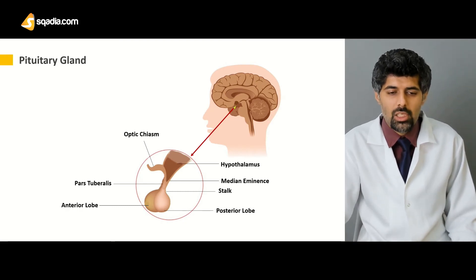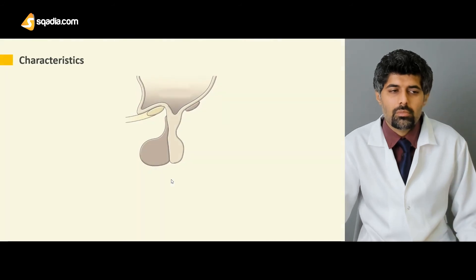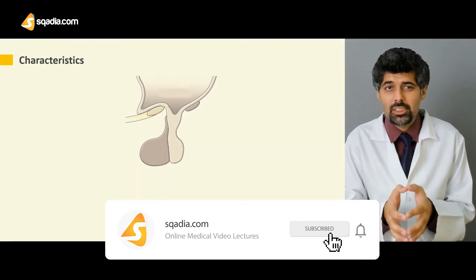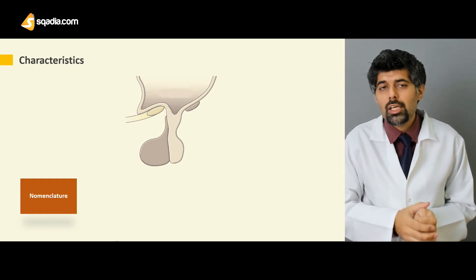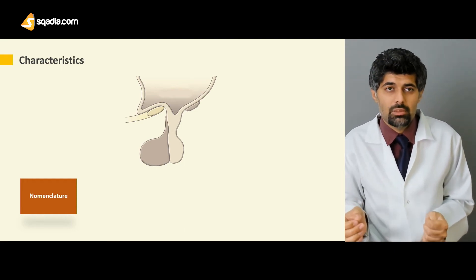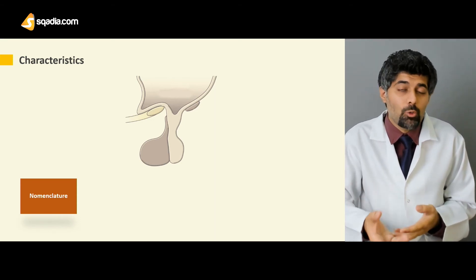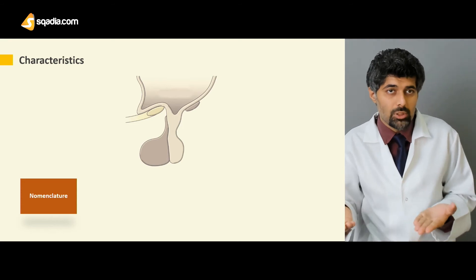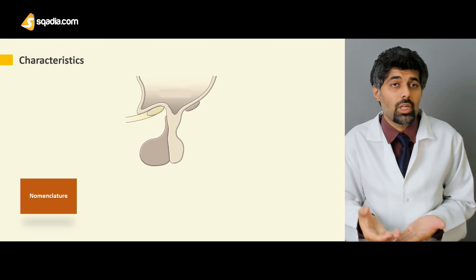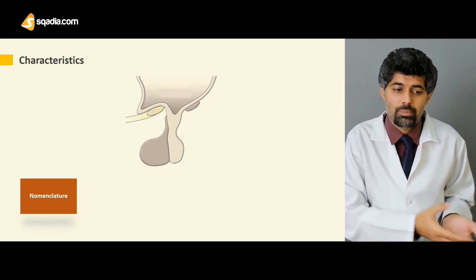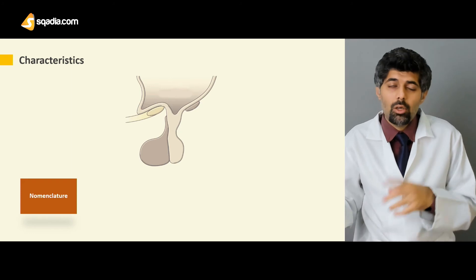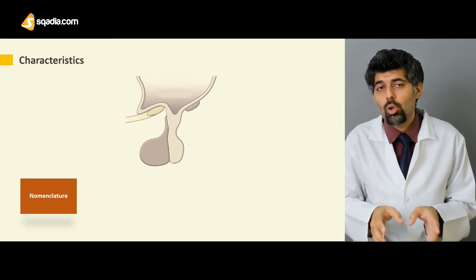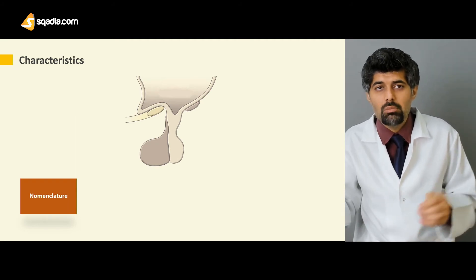Next we have the hypothalamus — the whole hypothalamus with its median eminence. Now let's talk about the characteristics of the pituitary gland. Starting with nomenclature: the pituitary gland is also known as the hypophysis, because it is found beneath the hypothalamus. It is also known as the master gland because it controls, directly or indirectly, almost all of the bodily functions, including both metabolism and growth.